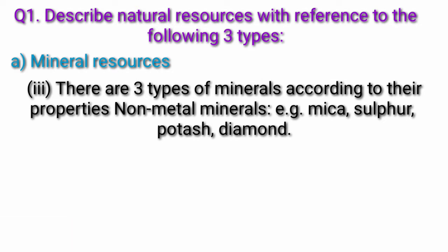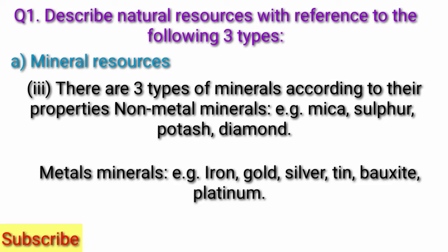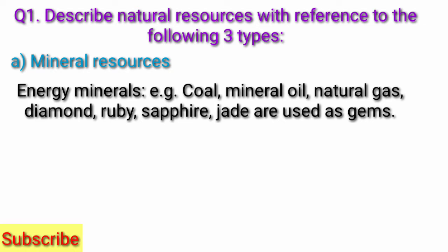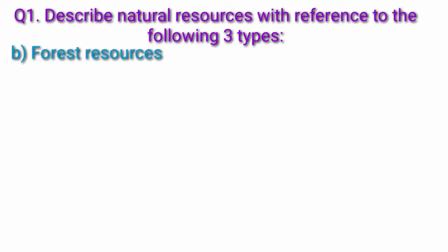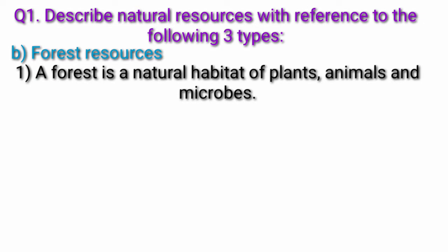There are three types of minerals according to their properties: non-metal minerals — example: mica, sulfur, potash, diamond; metal minerals — examples: iron, gold, silver, tin, bauxite, platinum; energy minerals — example: coal, mineral oil, natural gas. Diamond, ruby, and sapphire are used as gems. Some important minerals and ores are iron ore, copper, manganese, bauxite, copper, and mica.